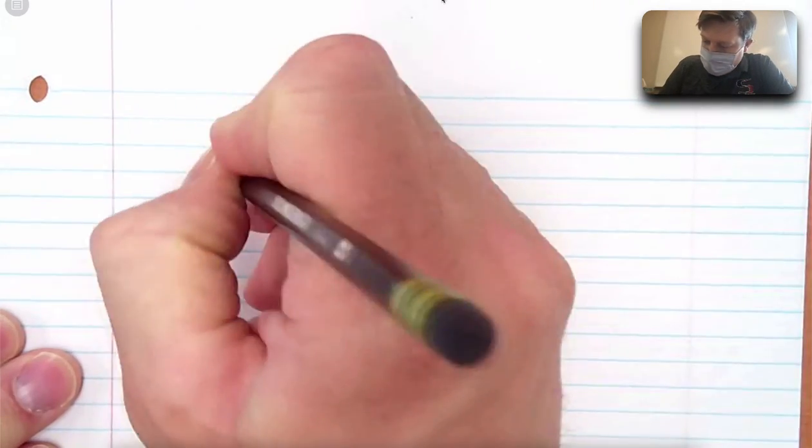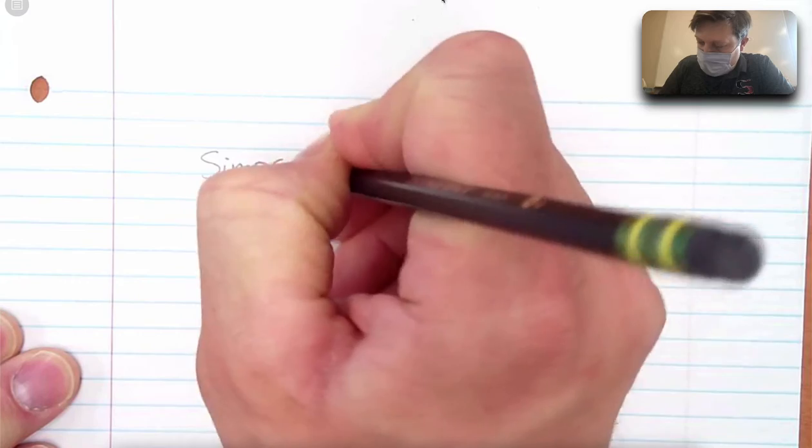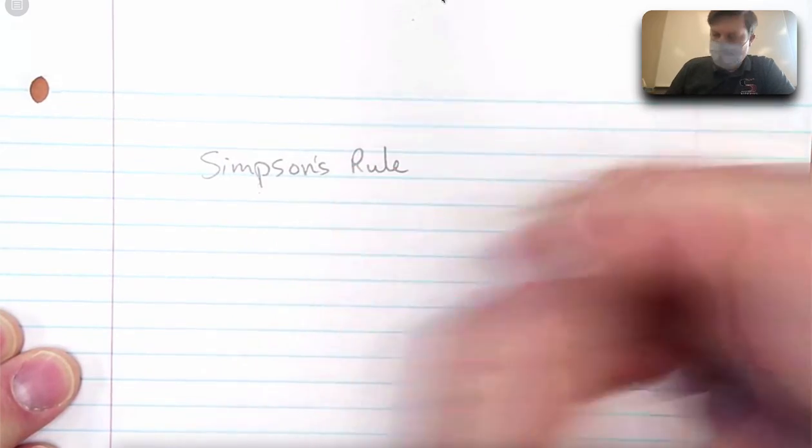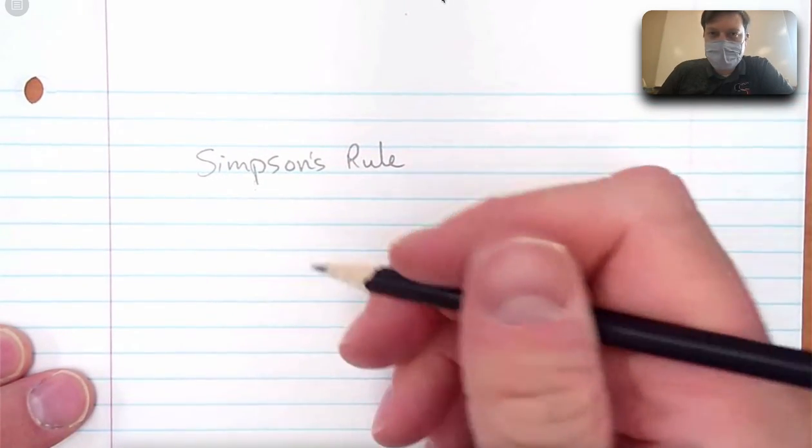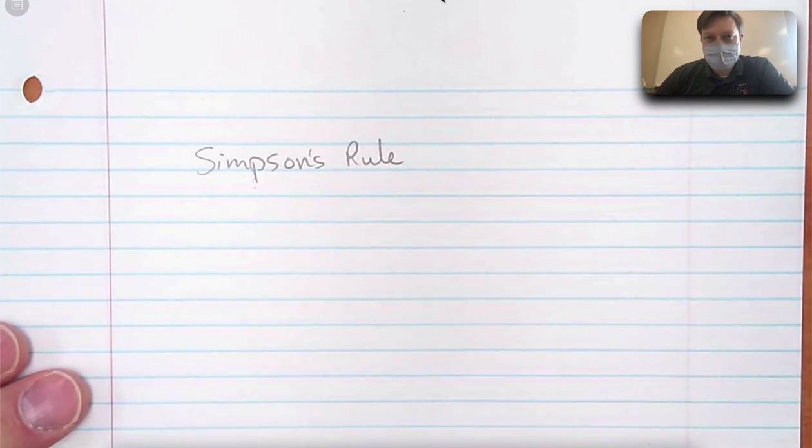Hey. Simpson's rule. This is the most accurate of the approximations because it's the one that uses curves.